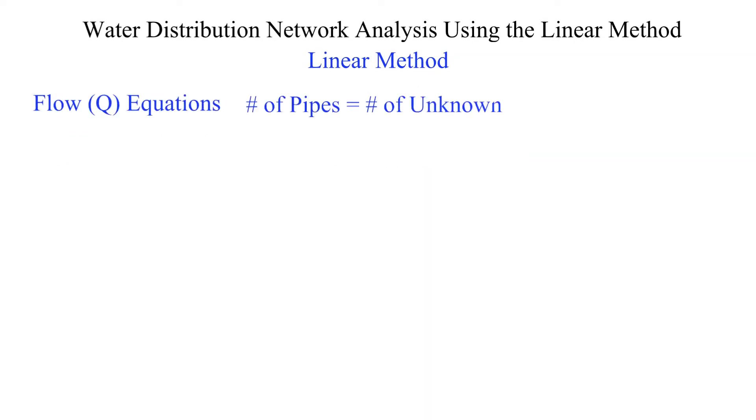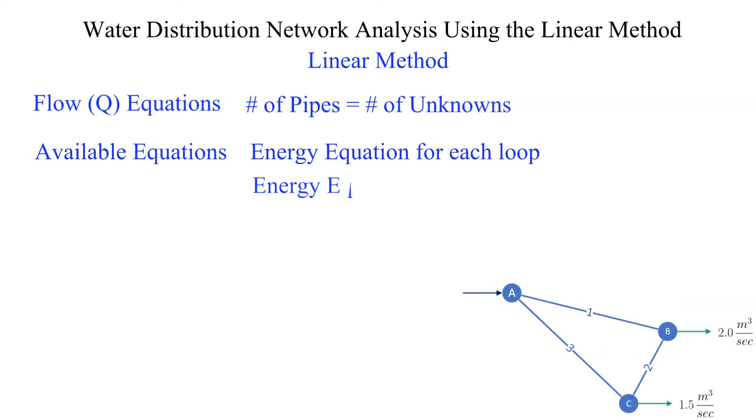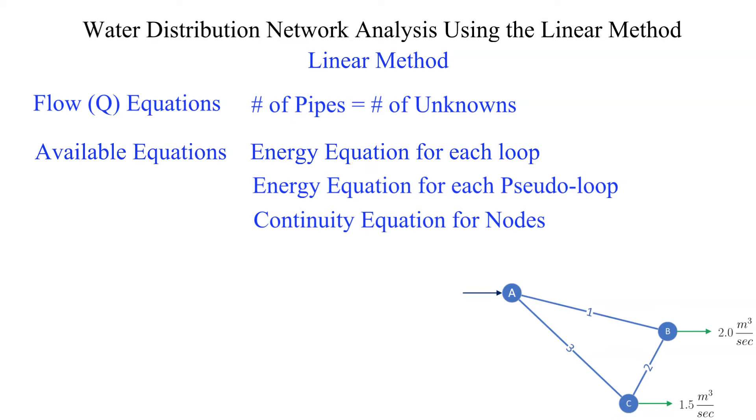In general the flow equations are defined from the application of the energy equation for each independent loop in the network including pseudo loops and by applying the continuity equation to each node. It is important that the equations are independent. In other words no equation can be derived from a linear combination of the other equations.